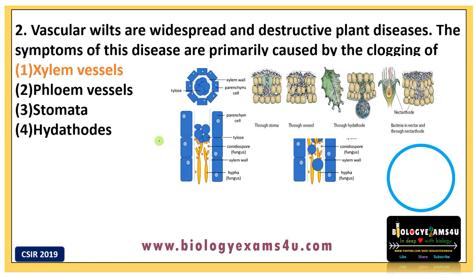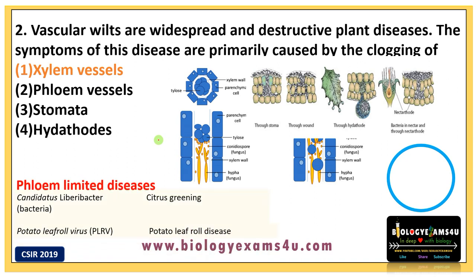There are also phloem-limited diseases. For example, Candidatus Liberibacter is a bacterium causing citrus greening, and Potato Leaf Roll Virus causes potato leaf roll disease — both are phloem vessel-associated diseases. This is the methodology I adopted while working out previous question papers: looking into all options and finding possible questions from each, which helped me a lot.